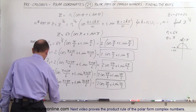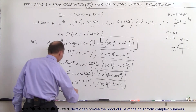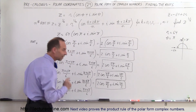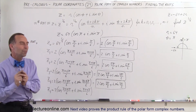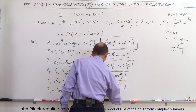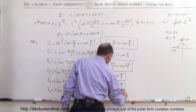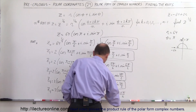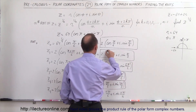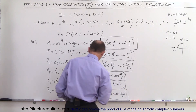Finally, for z sub 5, we let k equal 5. So z sub 5 equals 2 times the cosine of pi plus 10 pi divided by 6, plus i times the sine of pi plus 10 pi divided by 6. Pi plus 10 pi is 11 pi, so 11 pi over 6 — just under 2 pi — meaning all roots fall between 0 and 2 pi. Z sub 5 equals 2 times the cosine of 11 pi over 6, plus i times the sine of 11 pi over 6.